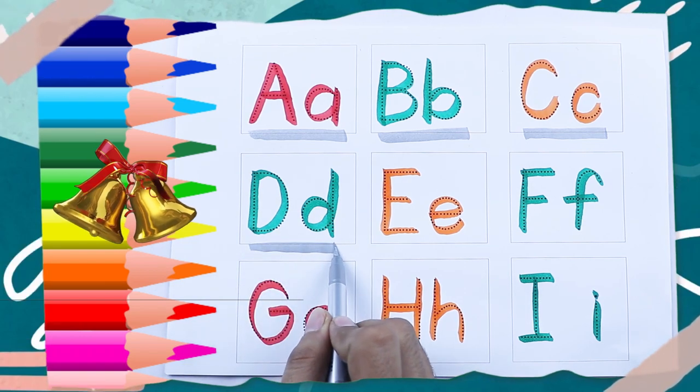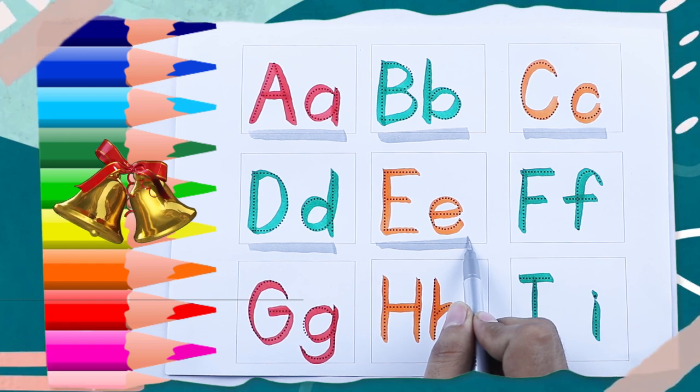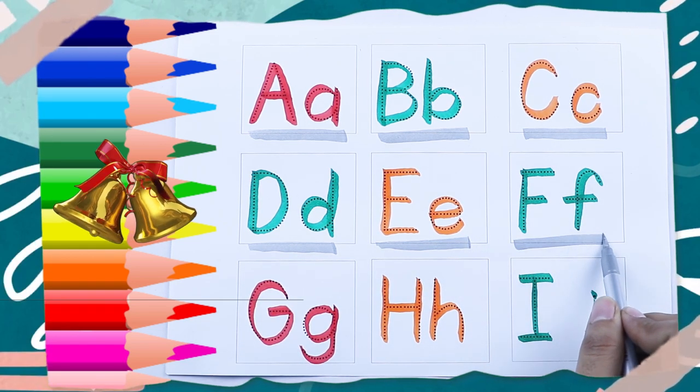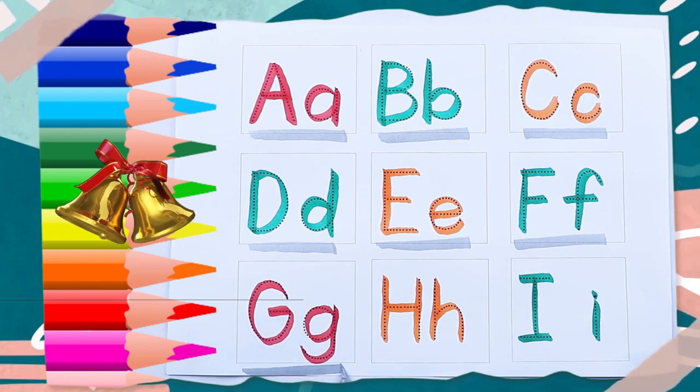Green color D, D for dog, orange color E, E for elephant, green color F, F for fish.